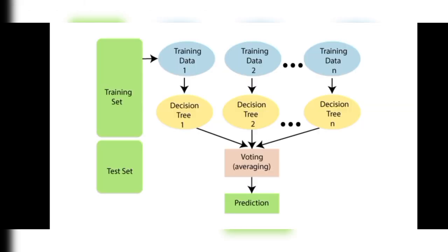From the training set, we divide the training data into subsets — training data 1, training data 2, up to training data N. For each subset, a decision tree is drawn. We then take the average values across all decision trees to make predictions. This is the Random Forest.